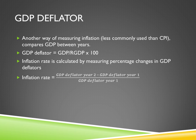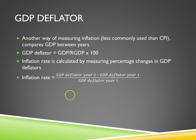Another way of measuring inflation is using the GDP deflator. The GDP deflator is simply a number that compares inflation-adjusted GDP to nominal GDP. By comparing GDP deflators between years, it provides a fairly accurate way of measuring inflation rates. The inflation rate is calculated by subtracting one year's GDP deflator from another and dividing that by the other GDP deflator to find the percentage change.